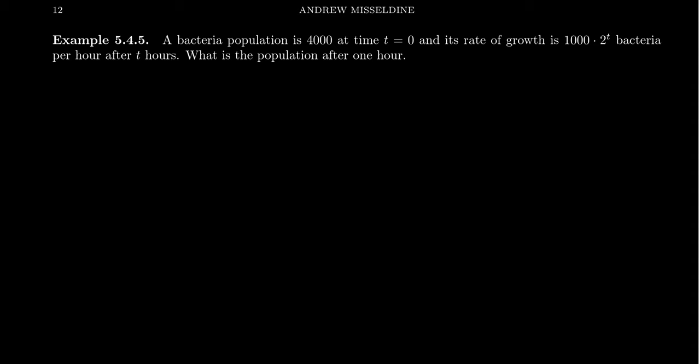For this last example, suppose we have a bacteria population of 4000 at the start of some experiment at time equals zero. We'll be measuring time in hours here, and 4000 represents 4000 bacteria. The bacteria are growing incredibly fast with a growth rate of 1000 times 2 to the t bacteria per hour.